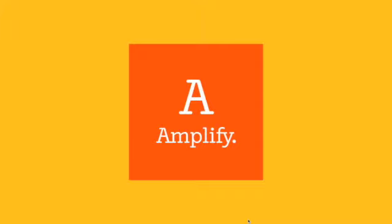Before each lesson, you will need to log into Amplify. Each of you have a Clever account. You may directly log into Clever using Clever.com, or you can access it through the student portal. Once on Clever, you will need to click on the orange Amplify icon. Your username for Clever should be your student ID. You will be given more information about logging into Amplify and Clever during your upcoming classes.